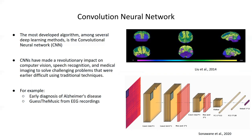In a recent paper on Guess the Music, only one second of EEG response was used to predict the song that a person is listening to. Hence, we utilize variants of convolutional neural network in our proposed pipeline.